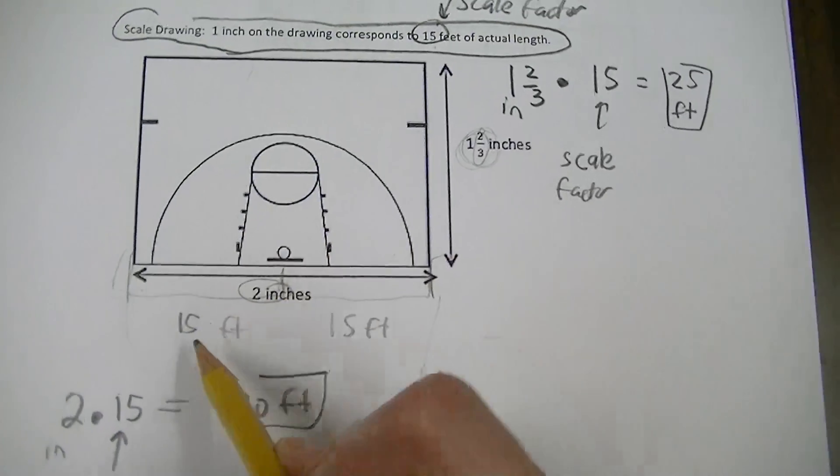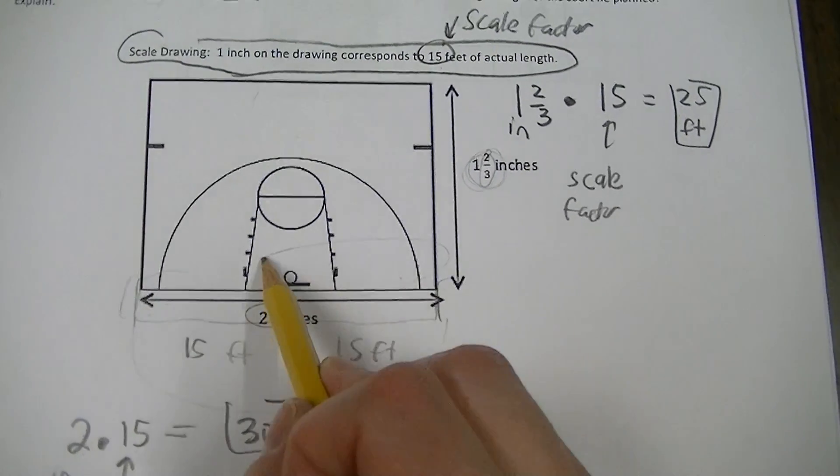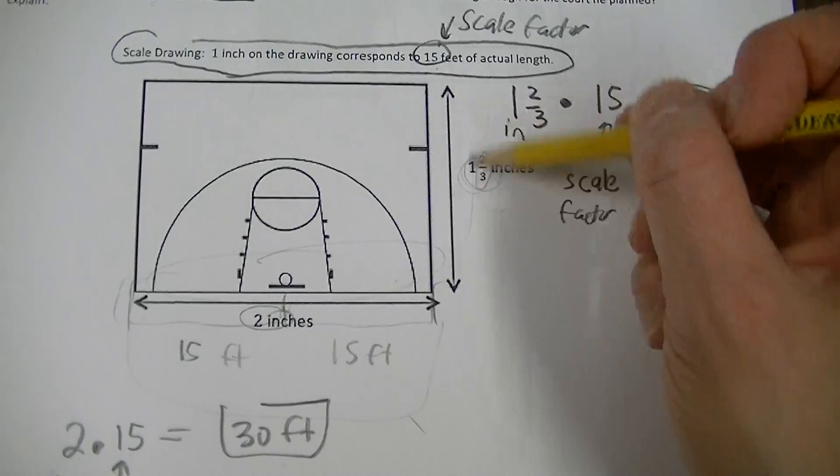So in real life, the basketball court will be 30 feet by 25 feet.